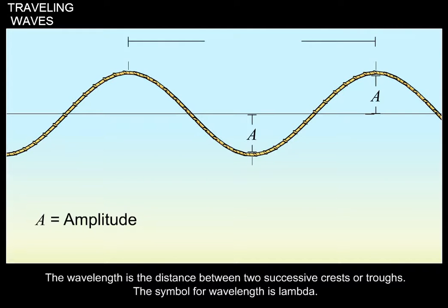The wavelength is the distance between two successive crests or troughs. The symbol for wavelength is lambda.